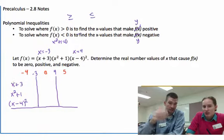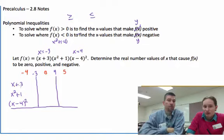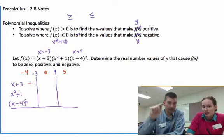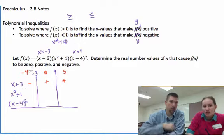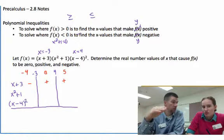So if I plug in a negative 4 or something bigger than negative 4 right here in x plus 3, I get something negative. If I plug in 0 here, 0 plus 3, I get a positive. If I plug in 5, I get a positive. And so we're going to do this on each level of our chart.